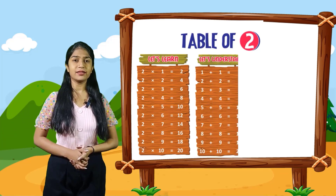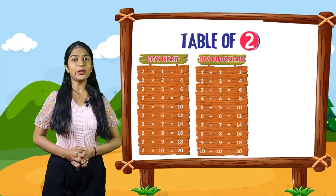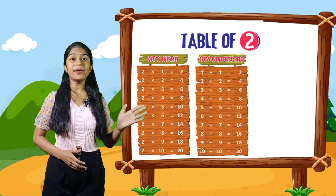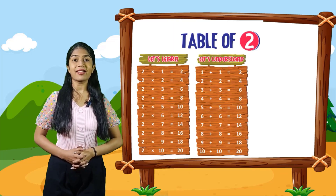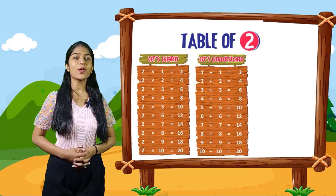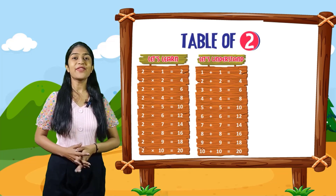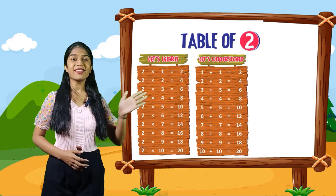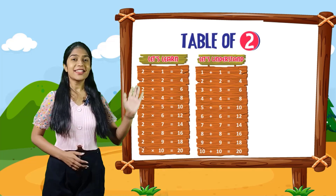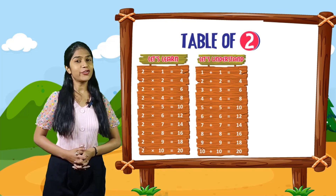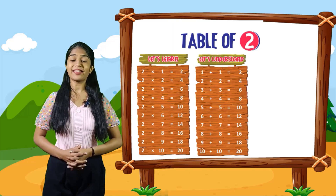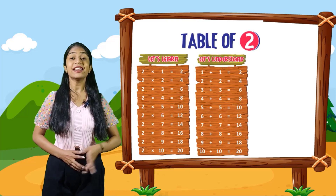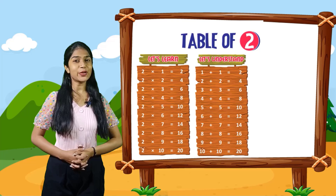So kids, now let's understand. 1 plus 1 is equal to 2. 2 plus 2 is equal to 4. 3 plus 3 is equal to 6. 4 plus 4 is equal to 8. 5 plus 5 is equal to 10. 6 plus 6 is equal to 12. 7 plus 7 is equal to 14. 8 plus 8 is equal to 16. 9 plus 9 is equal to 18. 10 plus 10 is equal to 20.